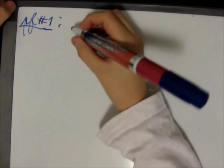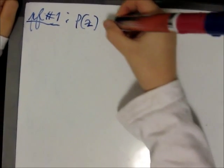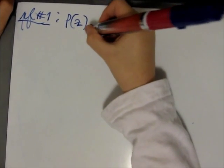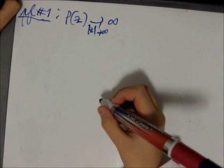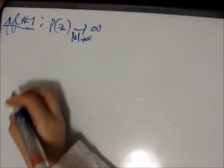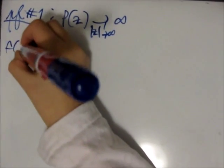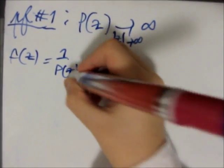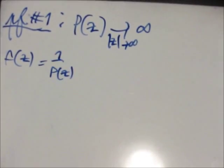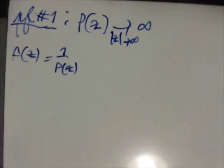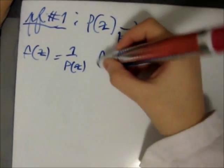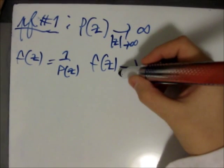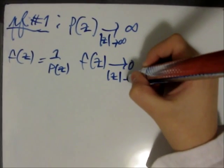We always know that P of Z goes to infinity when the modulus of Z goes to infinity. Therefore, we define F of Z as 1 over P of Z. This is well defined since P never vanishes. We know that F of Z goes to 0 when the modulus of Z goes to infinity.